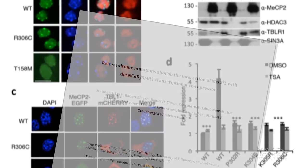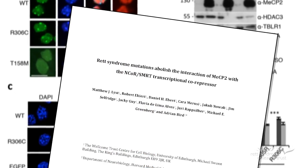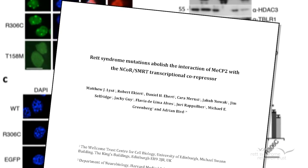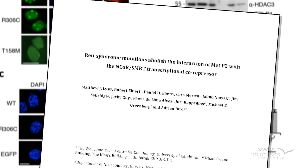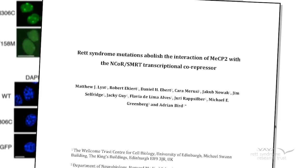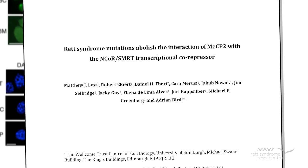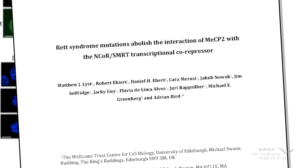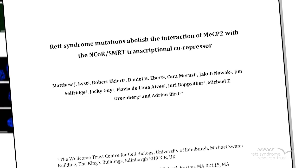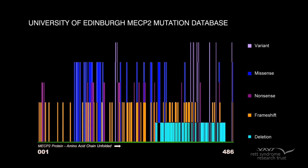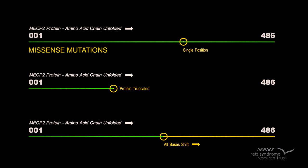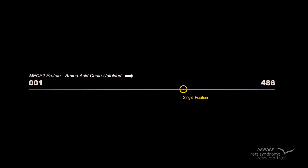A study published in Nature Neuroscience, led by Adrian Byrd of the University of Edinburgh and co-authored by Matthew List, in collaboration with Michael Greenberg and Daniel Ebert of Harvard Medical School, found that a cluster of Rett syndrome missense mutations prevent the binding of MECP2 to an essential partner protein. The Byrd and Greenberg labs have been working together since 2011 as members of the MECP2 consortium. At first inspection, mutations appear to occur all the way along the MECP2 gene, suggesting that the entire length of the protein is important. The Byrd lab decided to focus on missense mutations, since this type of genetic error changes only one amino acid, and can therefore lead us to structurally important locations of the protein.